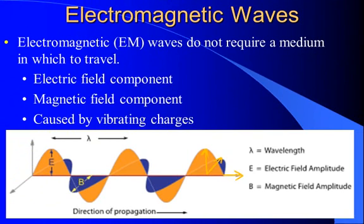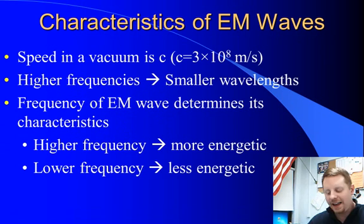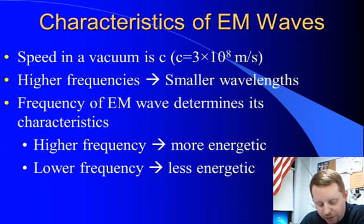Electromagnetic waves are caused by vibrating charges. But just like other waves, they have a wavelength, they have a frequency, and they have a wave speed. The speed of an electromagnetic wave in a vacuum is 3 times 10 to the 8 meters per second, or lowercase c, the fastest known speed in the universe.